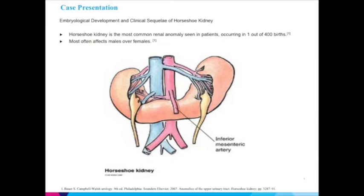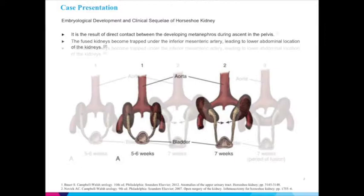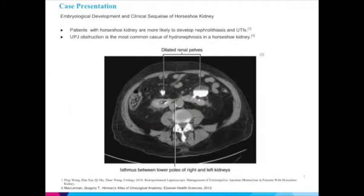Horseshoe kidney is the most common renal anomaly encountered, occurring in 1 out of 400 births. It is most commonly seen in males and is due to the direct contact of the developing metanephros resulting in their fusion during ascent. The ascending kidney then becomes trapped under the inferior mesenteric artery, leading to a more abdominal location of the horseshoe kidney.